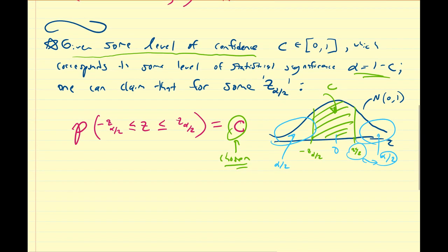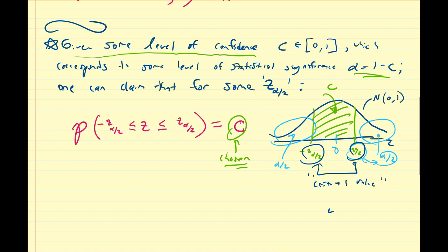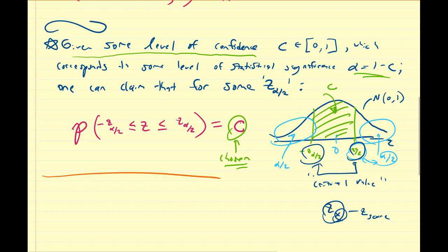So if I give you a value C, you should be able to find what this Z value — which we're going to call a critical value — is equal to. It's not necessarily a Z score in the usual sense; a Z score typically corresponds to a particular value X, whereas a critical value corresponds to a percentile alpha over 2 in this two-sided case. So to review: we choose a confidence level C, which corresponds to some level alpha, and then we can find the corresponding Z_α/2 using previously described methods.